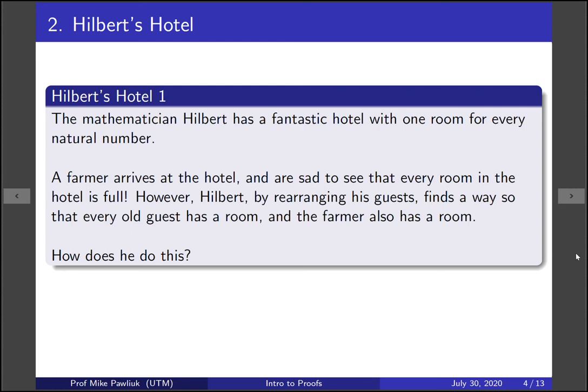To start off, we're going to think about a thought experiment called Hilbert's Hotel. The mathematician Hilbert has a fantastic hotel with one room for every natural number. So it has a room one, a room two, a room three, etc.